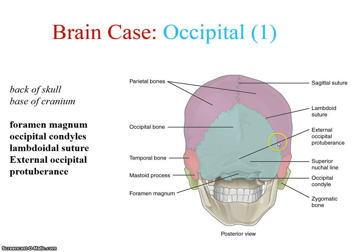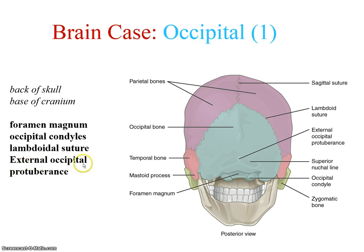The occipital bone is a single bone viewed from the posterior — not terribly remarkable, but it has the foramen magnum, the large hole for the spinal cord. It has occipital condyles on either side of the foramen magnum where the first vertebra, C1 or the atlas, articulates. It has a lambdoidal suture — lambda is the upside-down Y — which separates it from the parietals. There's an external occipital protuberance that sticks out in the back, and nuchal lines where muscles attach.